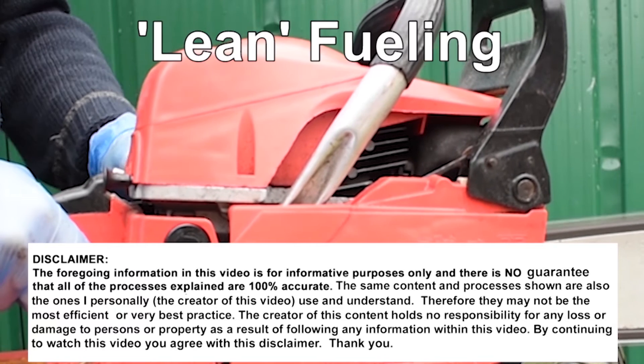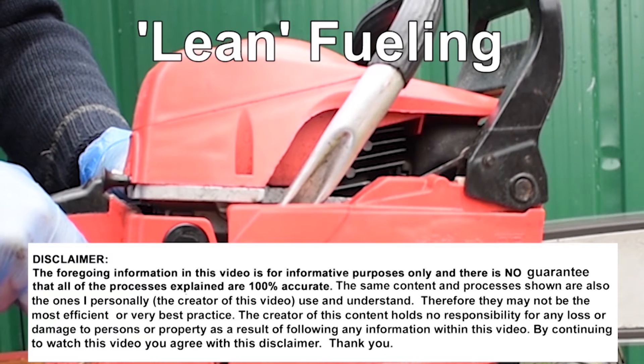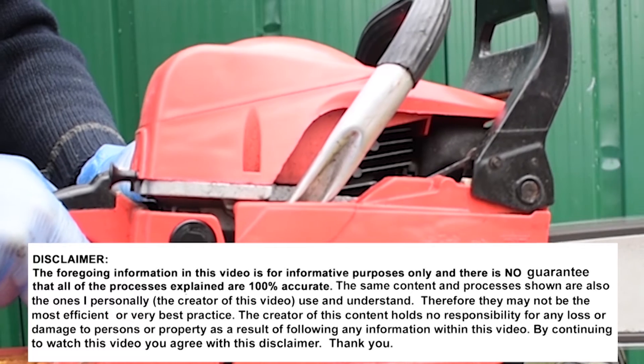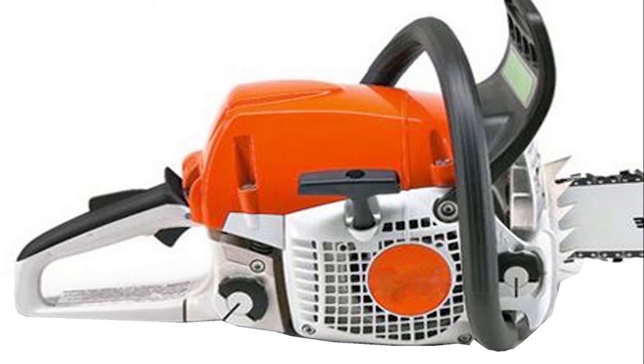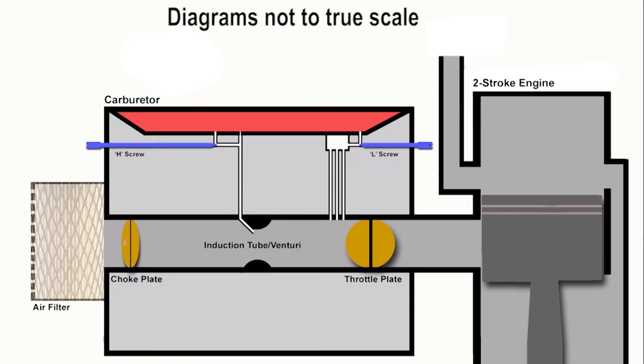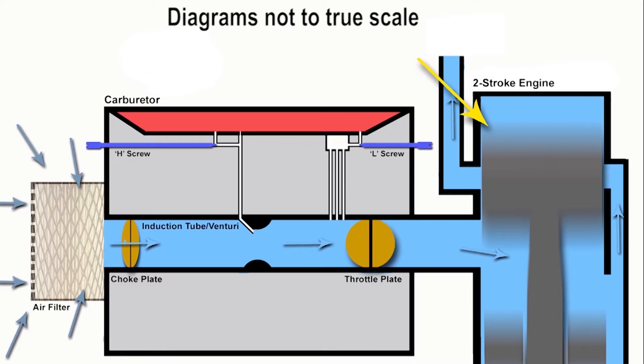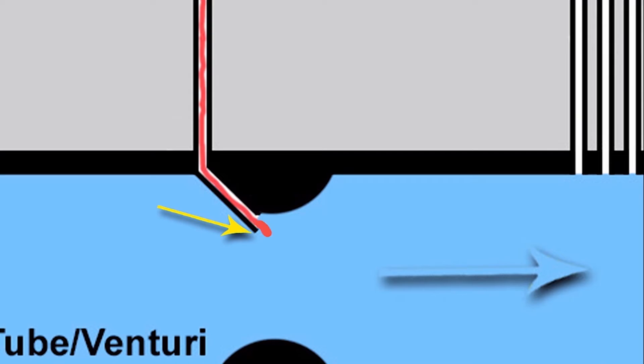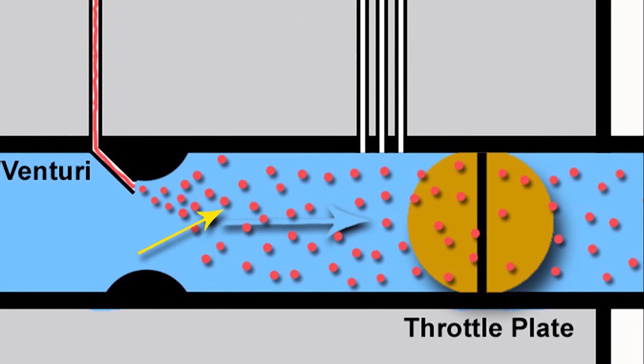OK, so to answer this successfully, we need to go through what the meaning of lean fueling actually is. To keep this simple, when the engine starts to move, air is drawn in through the induction tube, and as it does so, it draws out fuel from the main jet and mixes with the air in a process called atomisation. But it's the ratio between the air and fuel within this mixture that's the key player here.